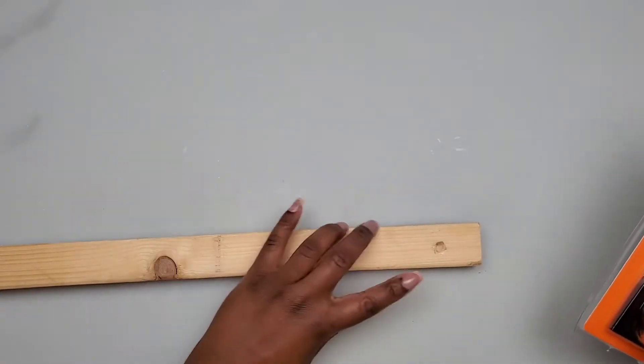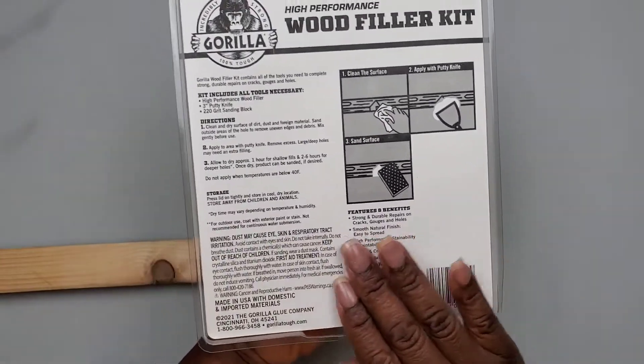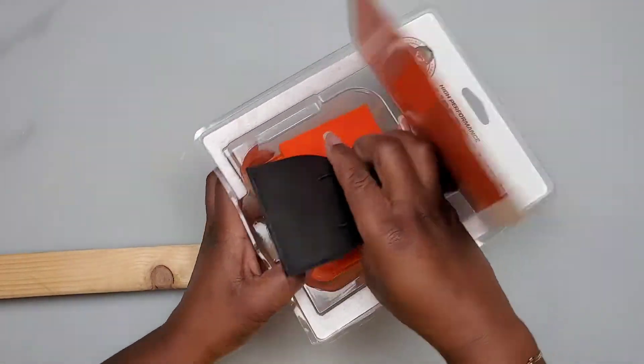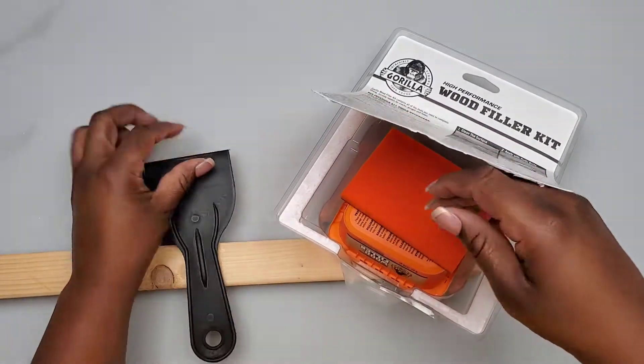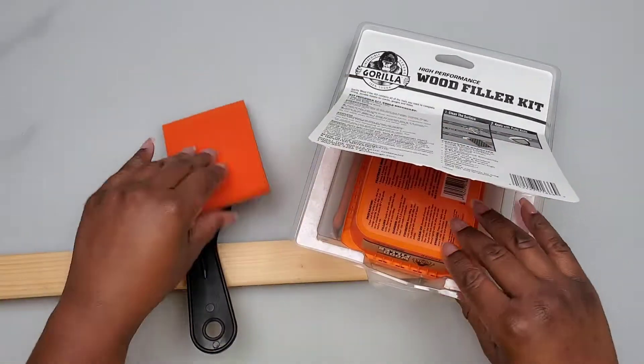This is the Gorilla Wood Filler Kit. I have a piece of wood with a 1/3 inch hole in it. I'm going to fill the hole and see what type of surface I'm left with and how well it takes the paint. It comes with a putty knife, a sanding block, and then we have our tub with our wood filler.